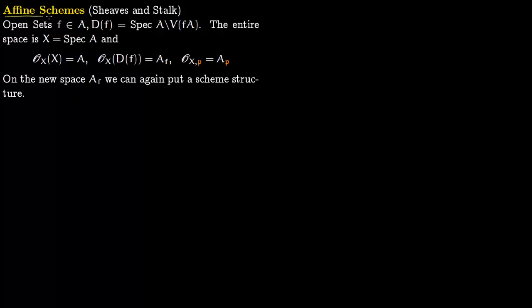In this lecture we talk about affine schemes. The prerequisite is the lecture on sheaves and stalks. First we talk about open sets. You fix an element F in some ring A. Associated with F you construct an open set D(F), which is Spec(A) — the prime ideals of A — minus V(F·A), the ideal generated by F. So D(F) is precisely the prime ideals that do not contain F.